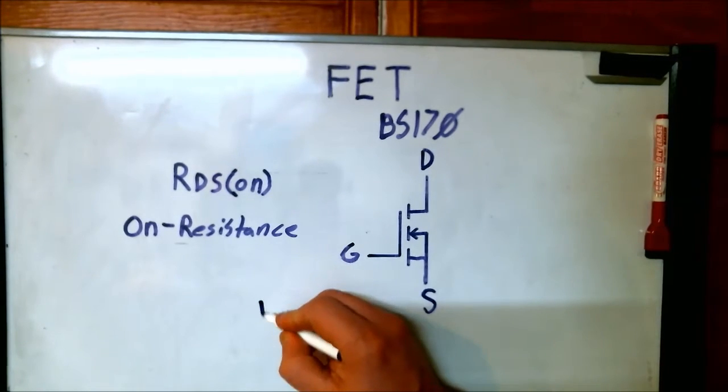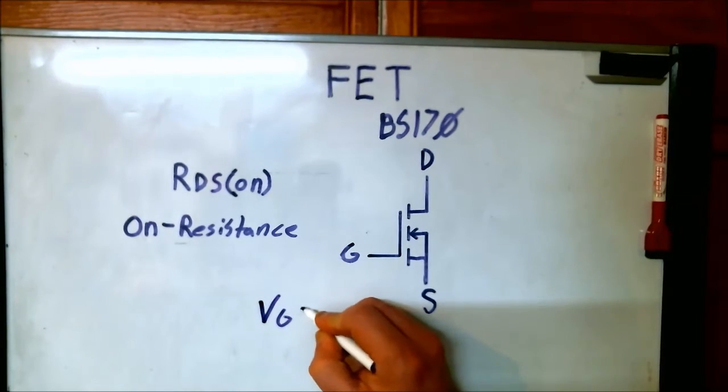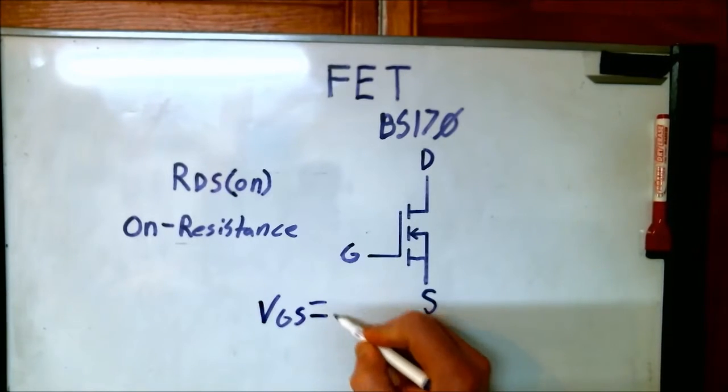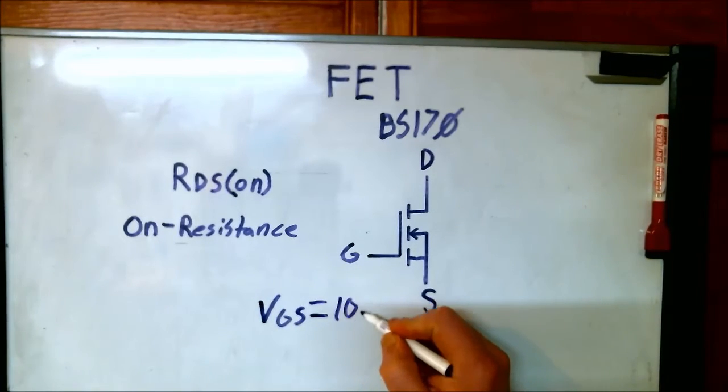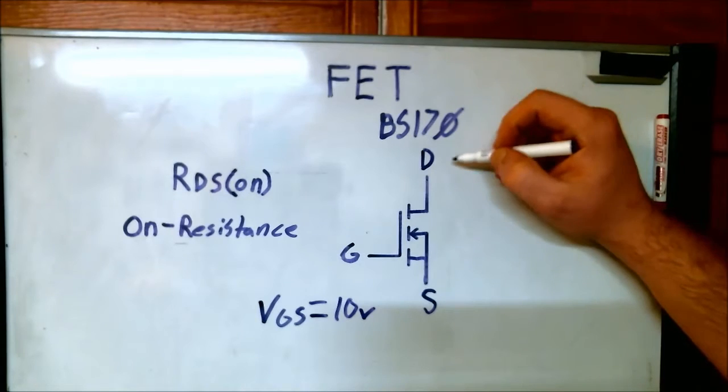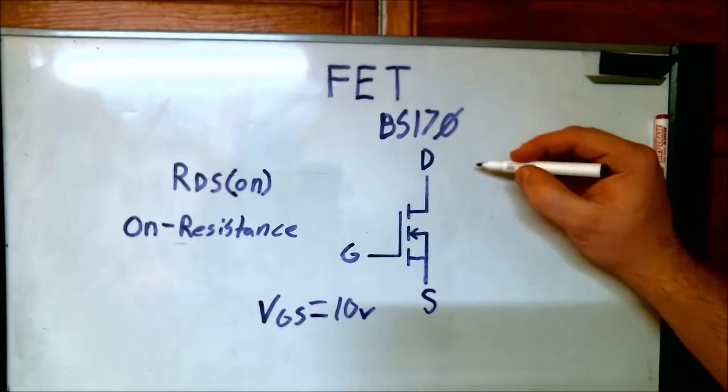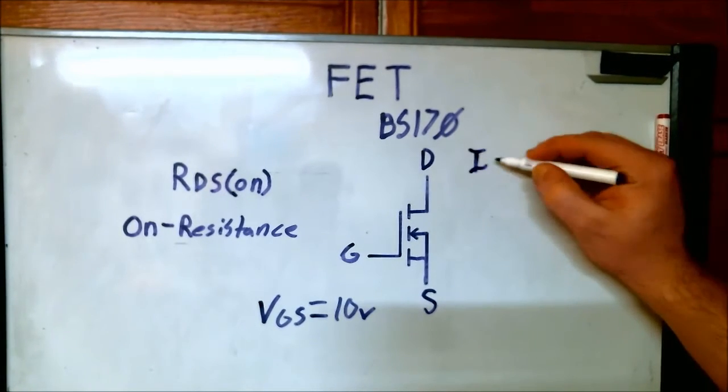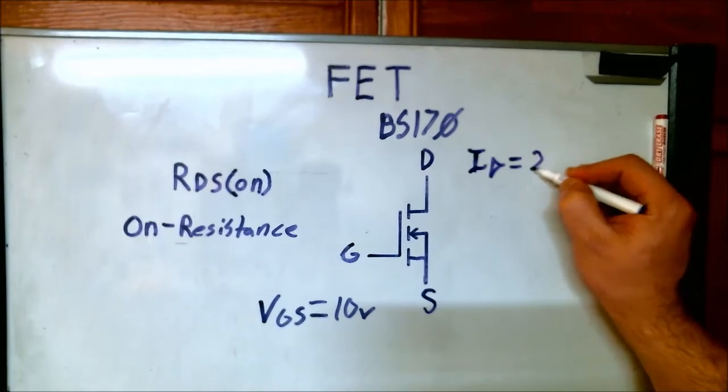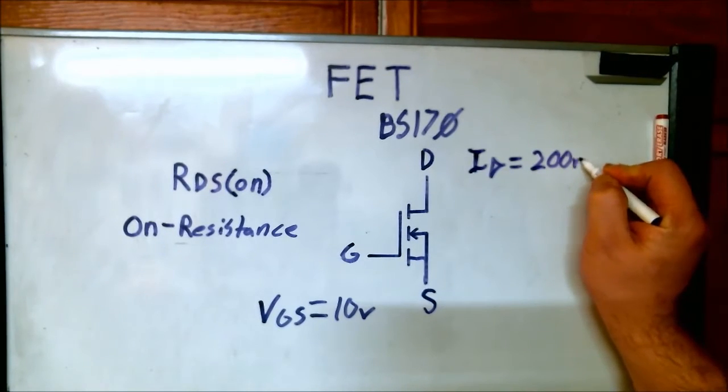The voltage between the gate and the source, VGS equals 10 volts, and the current through the drain, ID equals 200 milliamps.